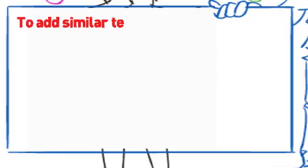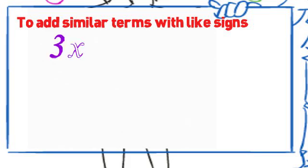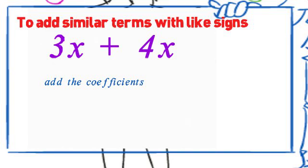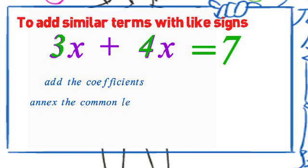To add similar terms with like signs, example, 3x plus 4x, there are two positive like terms. The first thing is to add the coefficients. Add the 3 and the 4 to get 7. The next thing is to annex the common letters. The common letter is x, so place it behind the 7.